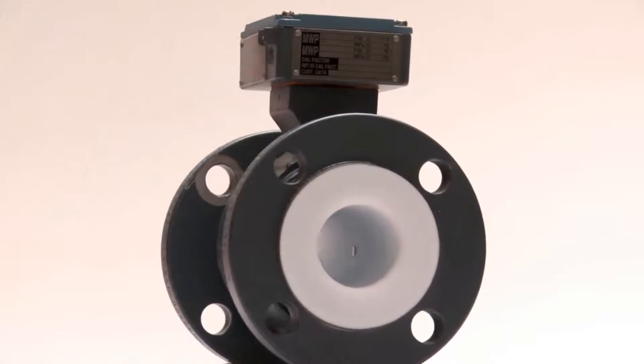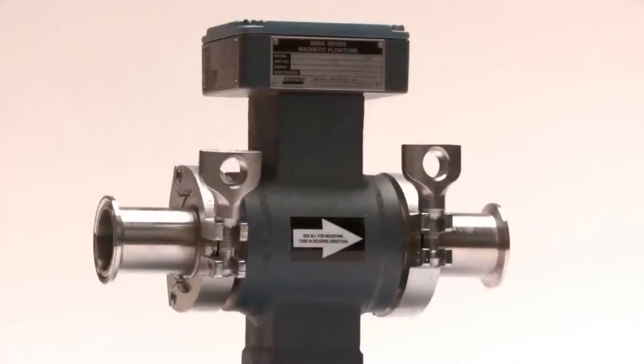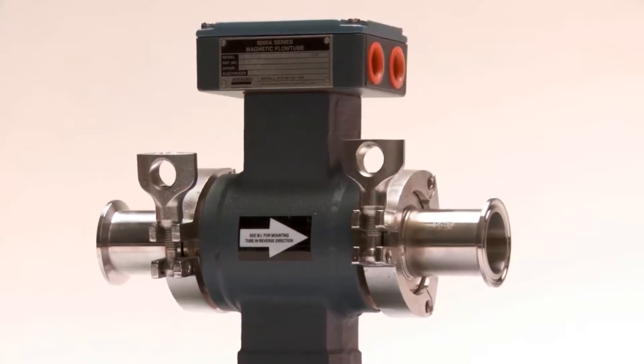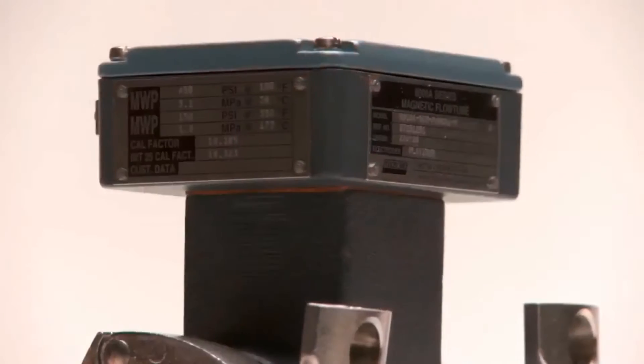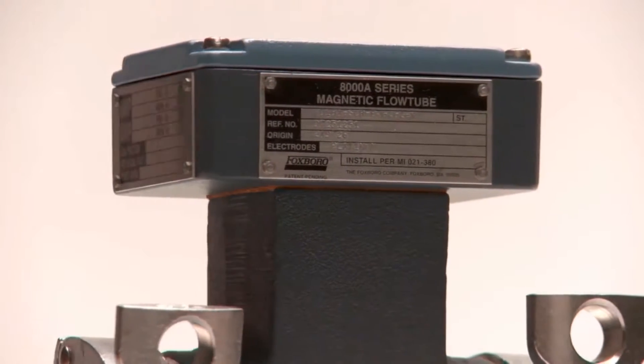FoxPro Magnetic Flow Tubes make a superior electrode system because they are designed with large electrodes, making output less sensitive to the effects of entrained air and unaffected by higher internal pressure.